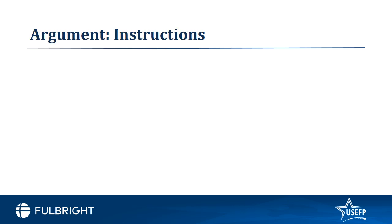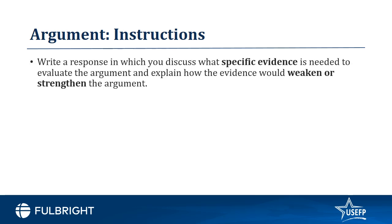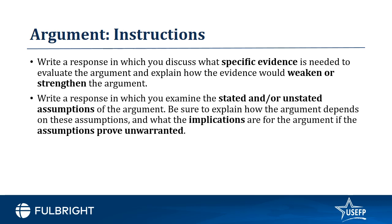The argument task consists of a passage in which the author makes a case for some course of action or interpretation of events by presenting claims backed by reason and evidence. Similar to the issue task, it is accompanied by a set of instructions. The first example reads: Write a response in which you discuss what specific evidence is needed to evaluate the argument and explain how the evidence would weaken or strengthen the argument. The second example reads: Write a response in which you examine the stated and/or unstated assumptions of the argument. Be sure to explain how the argument depends on these assumptions and what the implications are for the argument if the assumptions prove unwarranted.